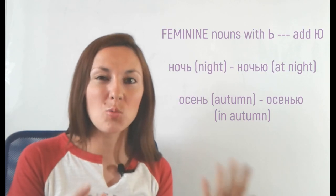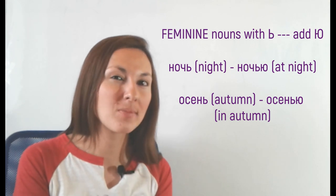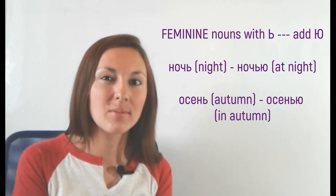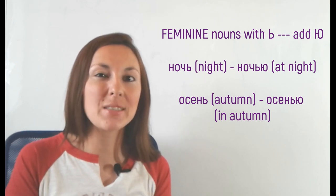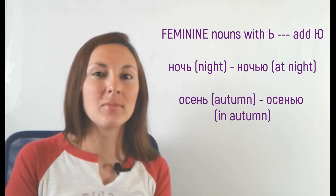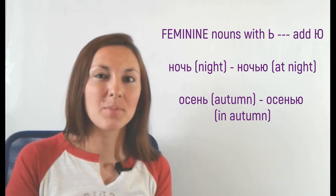But one note. For words with the soft sign that are feminine, like НОЧЬ or ОСЕНЬ, we add Ю. So, how to say in autumn? ОСЕНЬЮ. How to say at night? НОЧЬЮ. Well, that's basically all for instrumental and you've learned really a lot today.